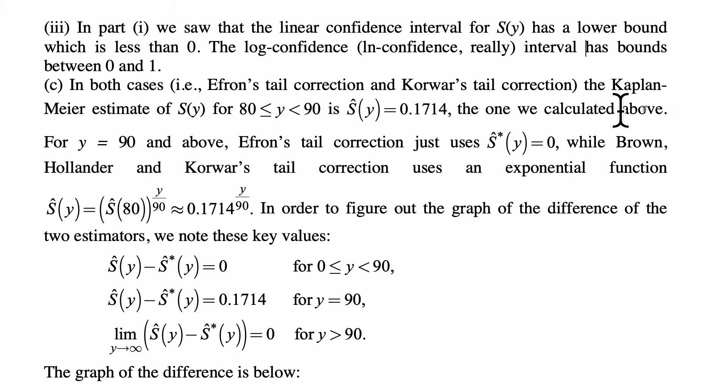In C, in both cases, so Efron's tail correction and Korwar's tail correction, the Kaplan-Meier estimate of S(y) for y between 80 and 90 is S-hat(y) equal to 0.1714, the one we calculated above.